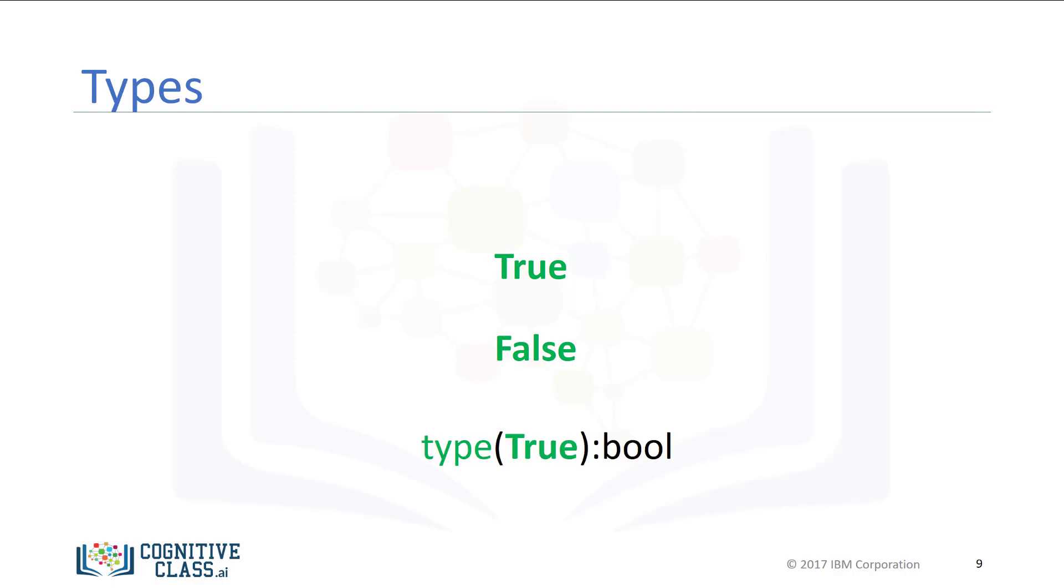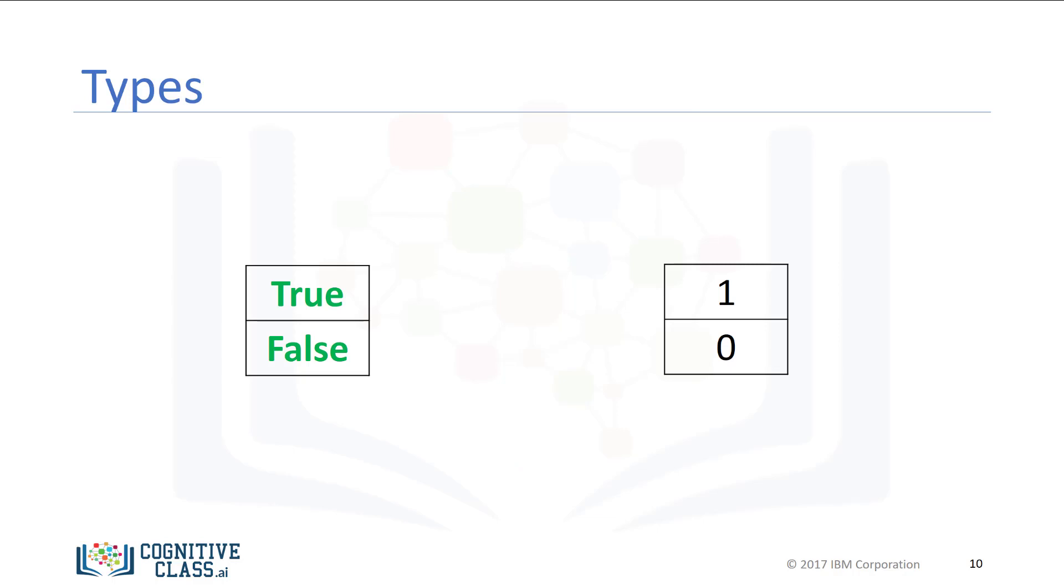Using the type command on a Boolean value, we obtain the term bool. This is short for Boolean. If we cast a Boolean true to an integer or float, we will get a 1. If we cast a Boolean false to an integer or float, we get a 0.